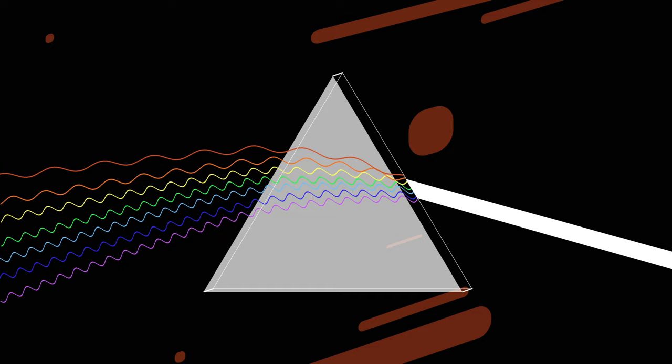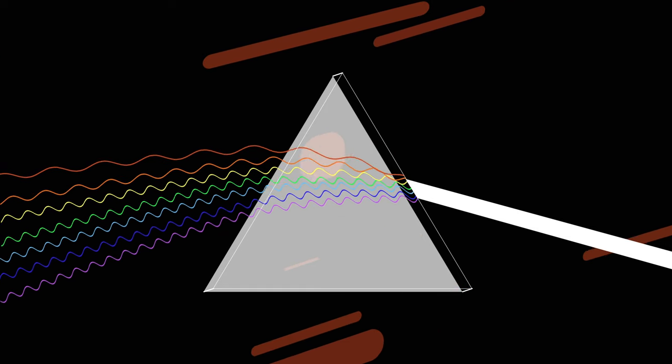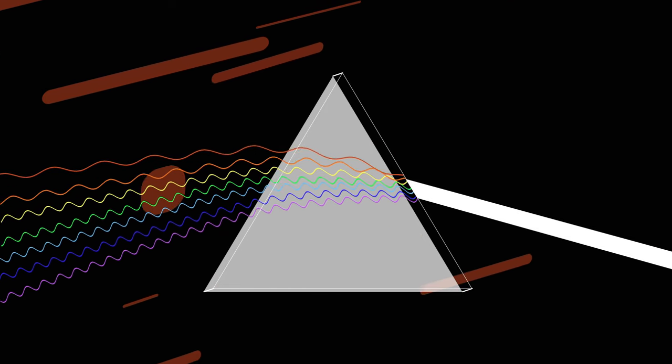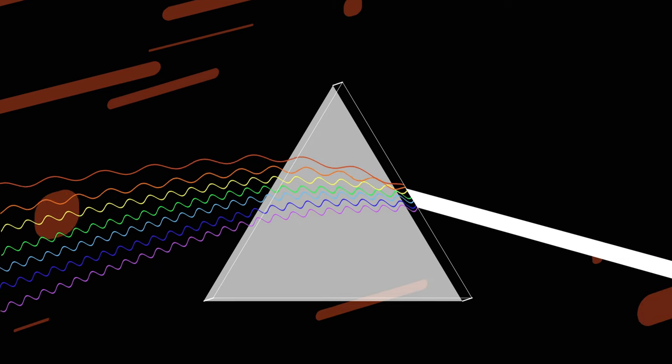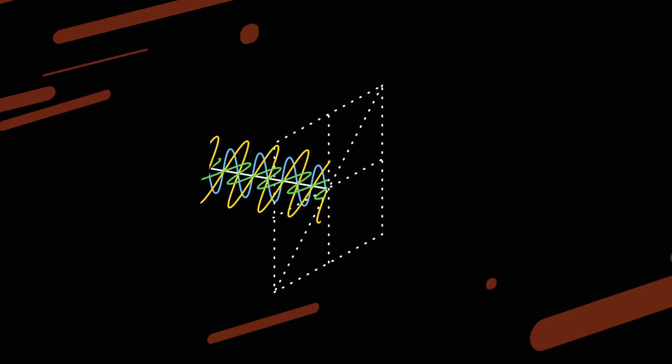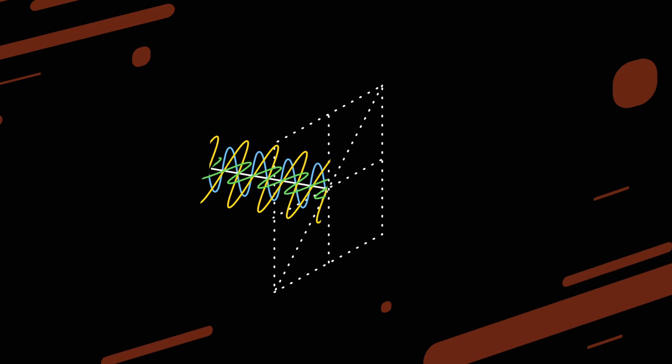The electric field component of a light wave can oscillate in any direction perpendicular to the direction of travel. Light from the sun oscillates in all directions. We say it is unpolarized. If the waves have a preferred direction of oscillation, they are polarized.